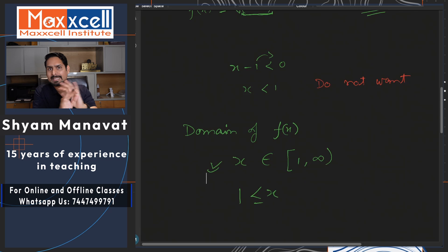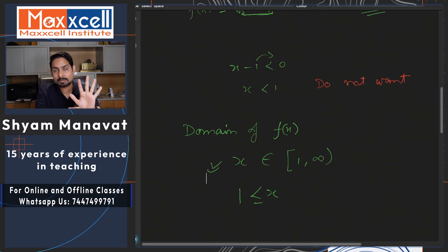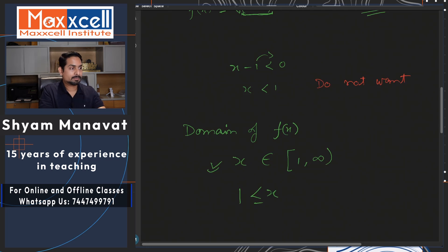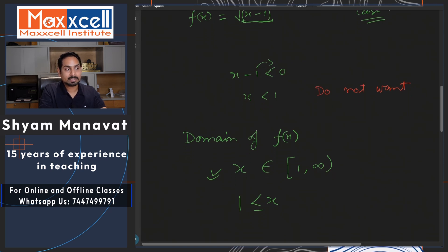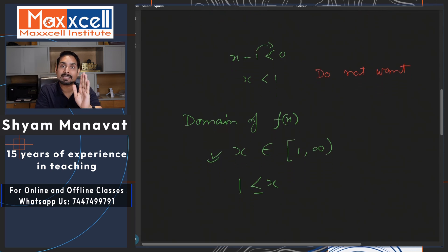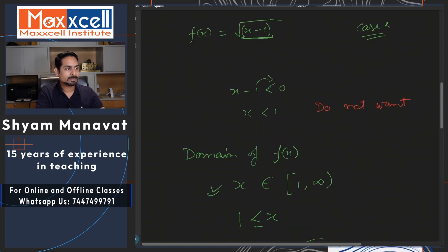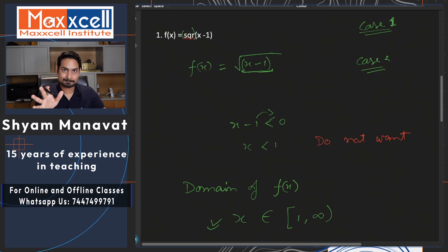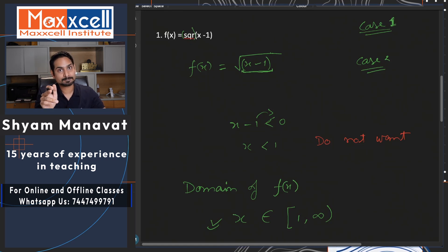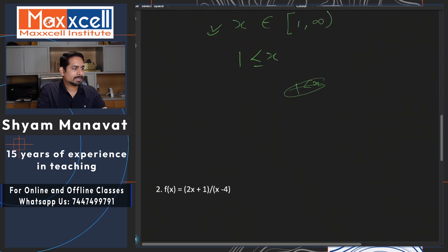The function output can be positive, negative, decimal, fraction — any outcome — but it should not have an imaginary value or be infinite. These two conditions should not occur. Square root of 0 is fine — it is defined, giving 0. But square root of a negative is not defined. Now, for the range of the first example — range could be anything: 0, positive, negative, decimal. Square root of 4 is plus or minus 2, so anything is possible. The range of this function will be all real numbers.